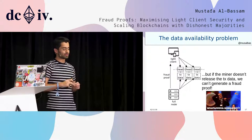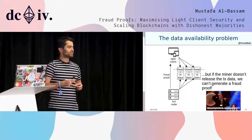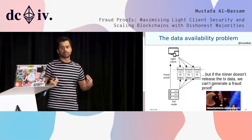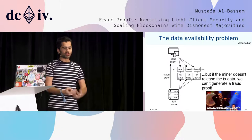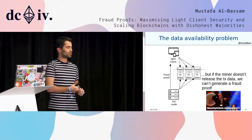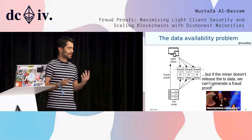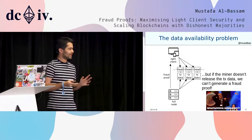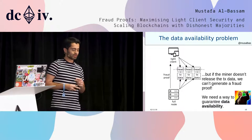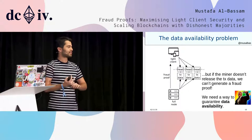The data availability problem says: what if a miner only distributes the block headers to the light clients? The light clients only know the block headers. What if no one knows the actual transaction data of the block? Just because you know the Merkle root for the transactions doesn't mean you know what the data behind that Merkle root is. If a miner does this, a full node wouldn't be able to generate a fraud proof because they simply would not have the data to generate it. We need a way to guarantee the availability of the data in the blockchain.